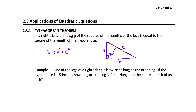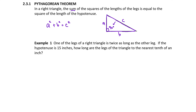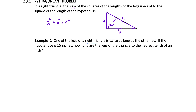Let's use this as our governing equation as we solve Example 1. One of the legs of a right triangle is twice as long as the other leg. If the hypotenuse is 15 inches, how long are the legs of the triangle to the nearest tenth of an inch? To understand this problem, let's draw a picture. We've got a right triangle where one of the legs is twice as long as the other leg. We will model this correctly with our variables.